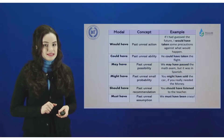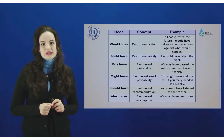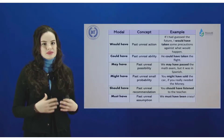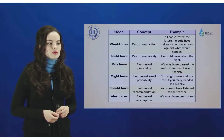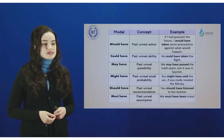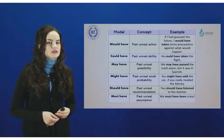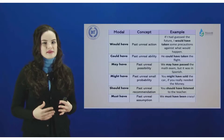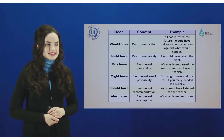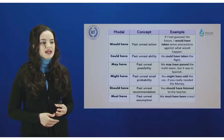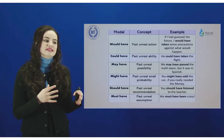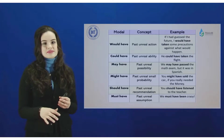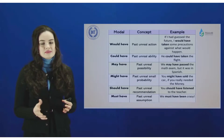Let's be attentive, because here I've set up a table in order to give you a clearer picture of these modals. The first column is the verb itself, the second is the concept, and of course, example. You cannot get to know something new without examples. The first entry is 'would have.' Would have is a past unreal action — you may express some dreams that didn't come true in your life.